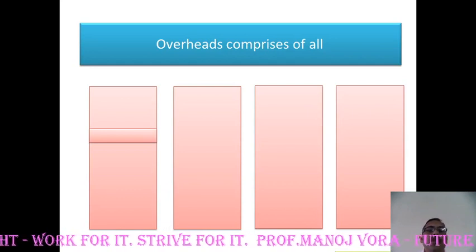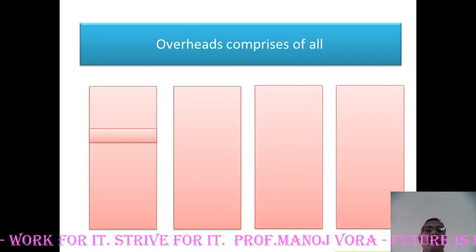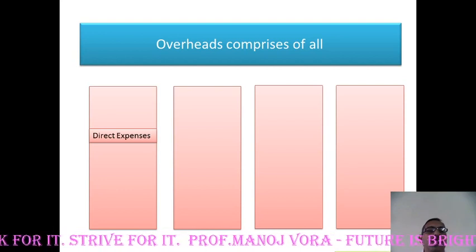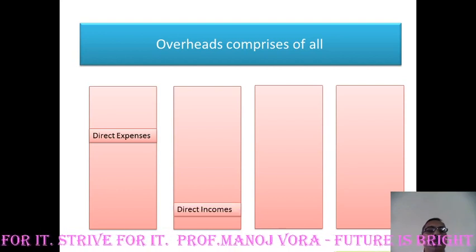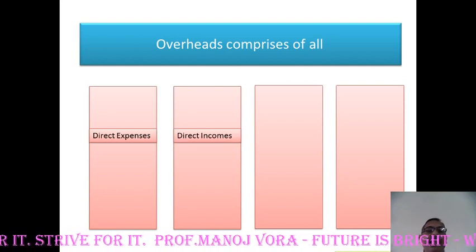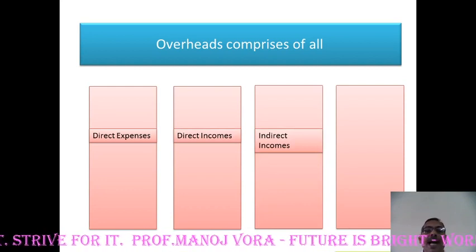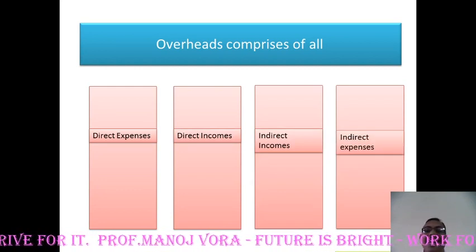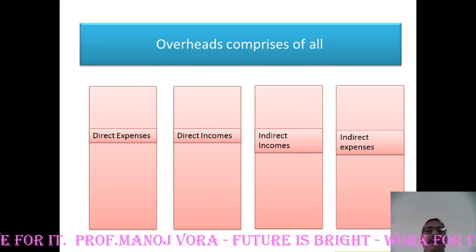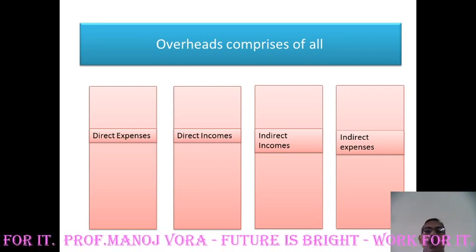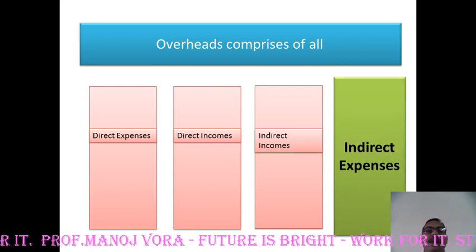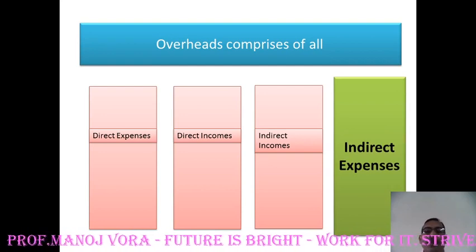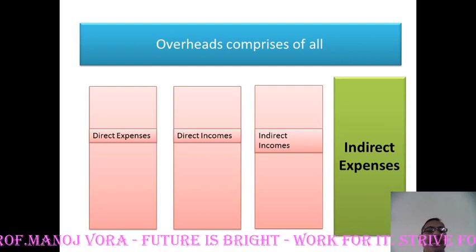Your next question: overheads comprises of all — first option direct expenses, second option direct incomes, third option indirect incomes, and fourth option indirect expenses. Here is your right answer: overheads comprises of all indirect expenses over and above the direct expenses.